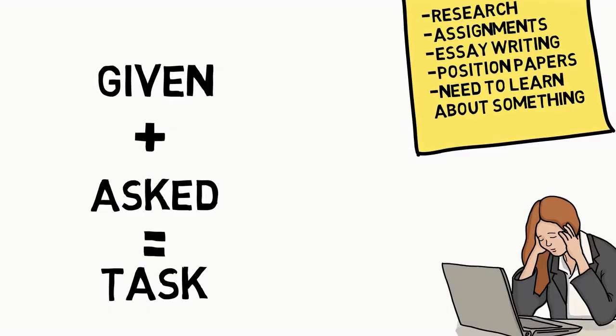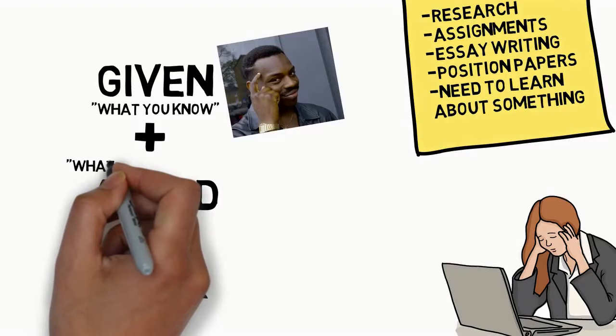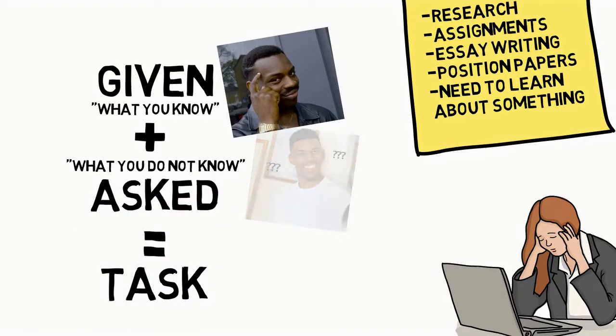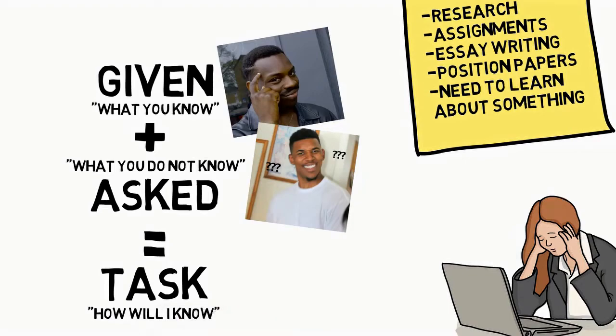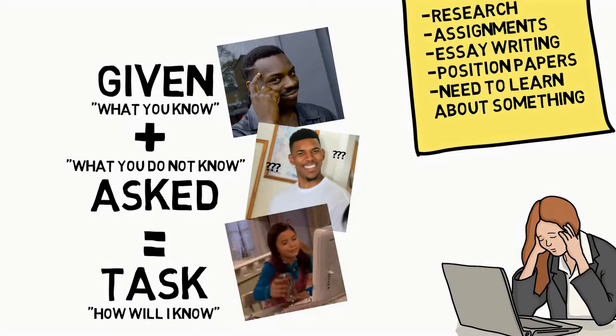So how would you do that? First, write the things you know about the topic. Then, identify the things you don't. From that list, try to figure out ways on how to obtain the missing information based on the clues you can get from the information you already have.